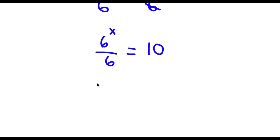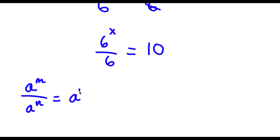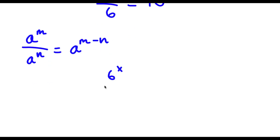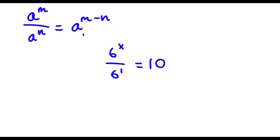Now if I have something in the form a to the power of m over a to the power of n, this is equal to a to the power of m minus n. So in this case 6 is the same thing as 6 to the power of 1. So I have 6 to the power of x over 6 to the power of 1, and if you divide these two you get 6 to the power of x minus 1 is equal to 10.